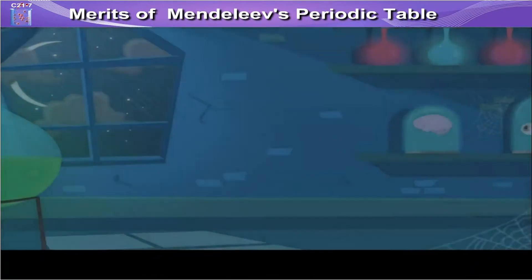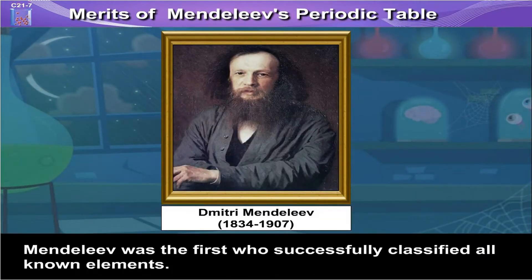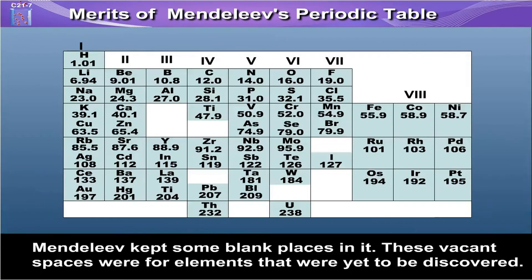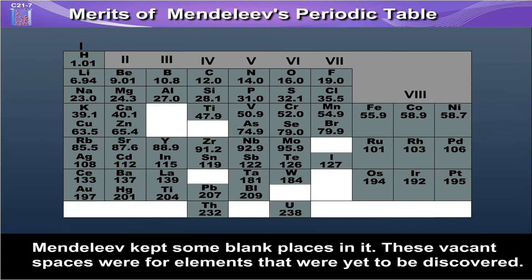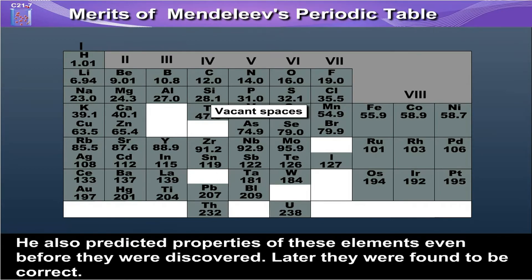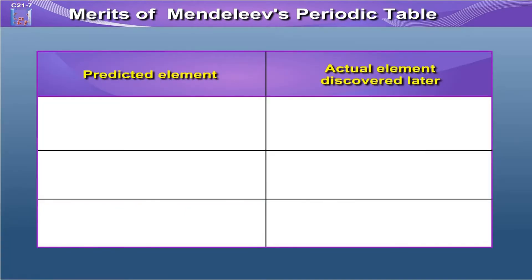Merits of Mendeleev's periodic table: Mendeleev was the first who successfully classified all known elements. Mendeleev kept some blank places in it — these vacant spaces were for elements that were yet to be discovered. He also predicted properties of these elements even before they were discovered, and later they were found to be correct. The predicted element Eka-Boron was later discovered as Scandium.